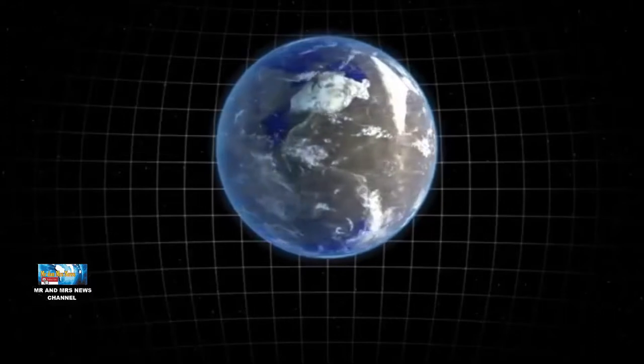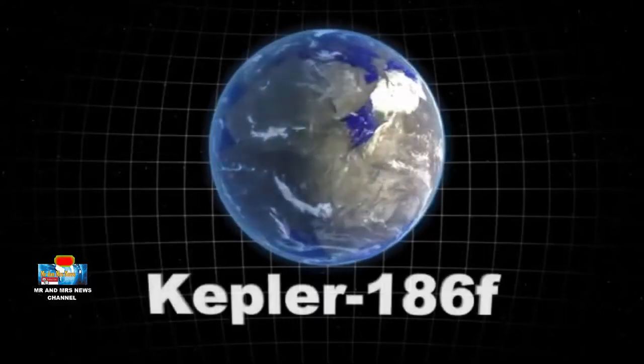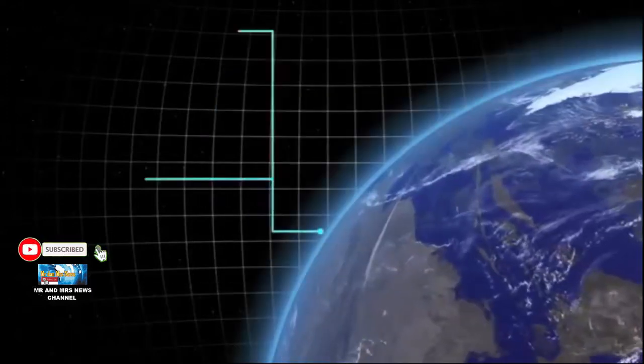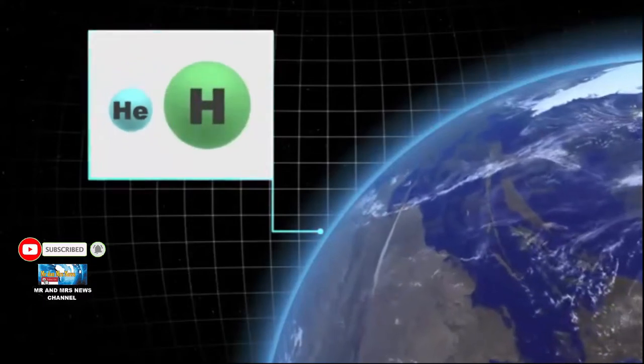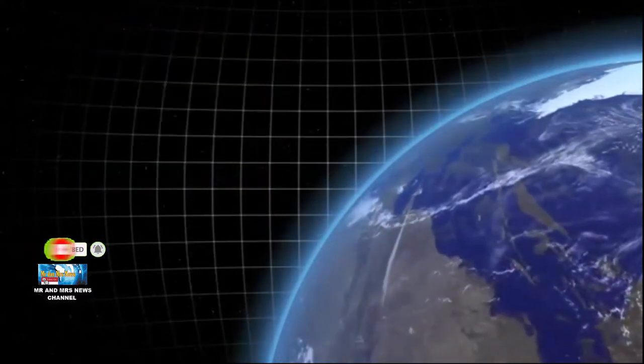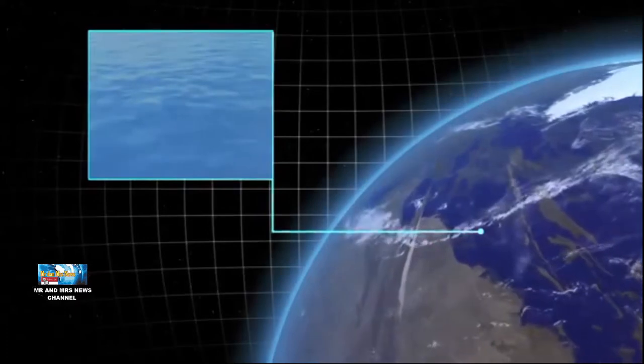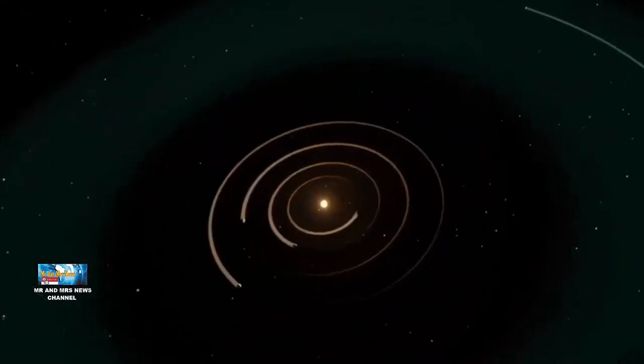Sebuah planet dijuluki sepupu bumi baru saja ditemukan pada jarak 490 tahun cahaya dari bumi. Planet tersebut dinamai Kepler-186F. Ia adalah planet seukuran bumi pertama yang ditemukan di zona layak huni bintangnya.